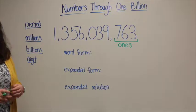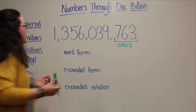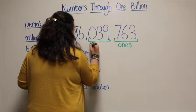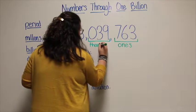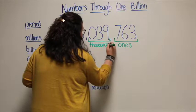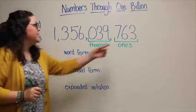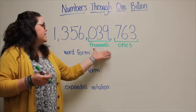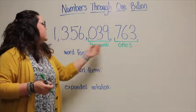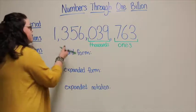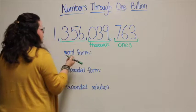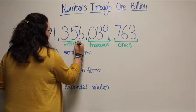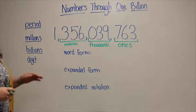My next group of three digits is going to be a new period — this is my thousands period. I have three numbers which make a period, so I put a comma to show I'm starting a new period. Now I'm in the thousands. Then I have another comma because I'm starting a new period, and this is going to be my millions period.